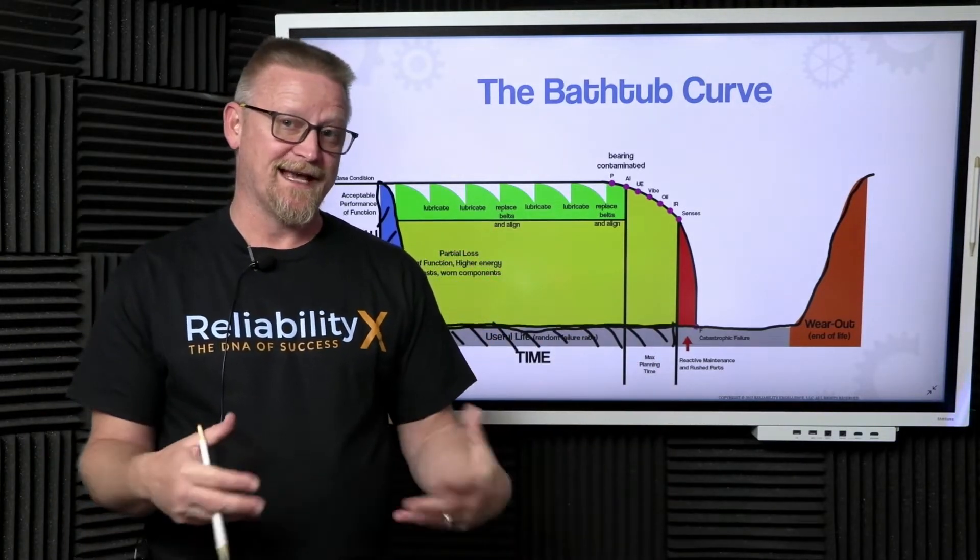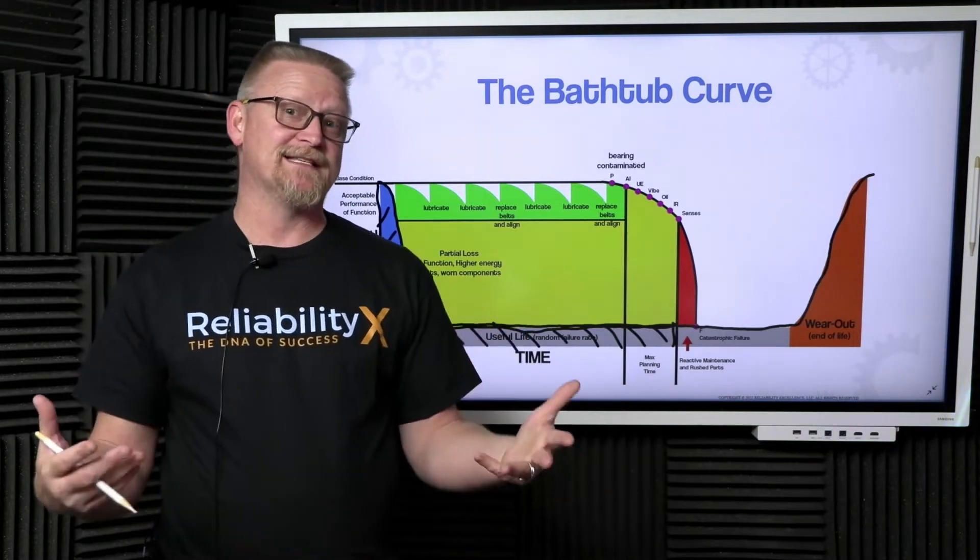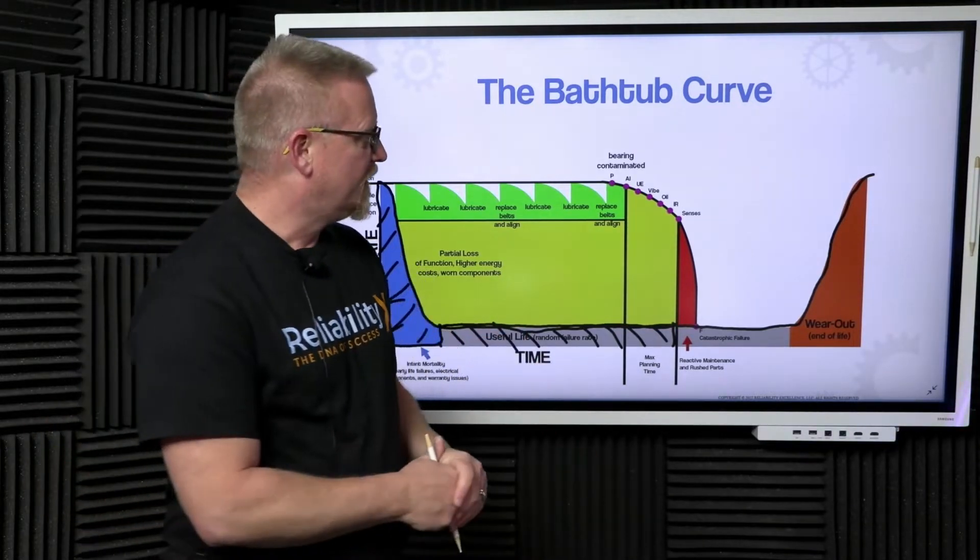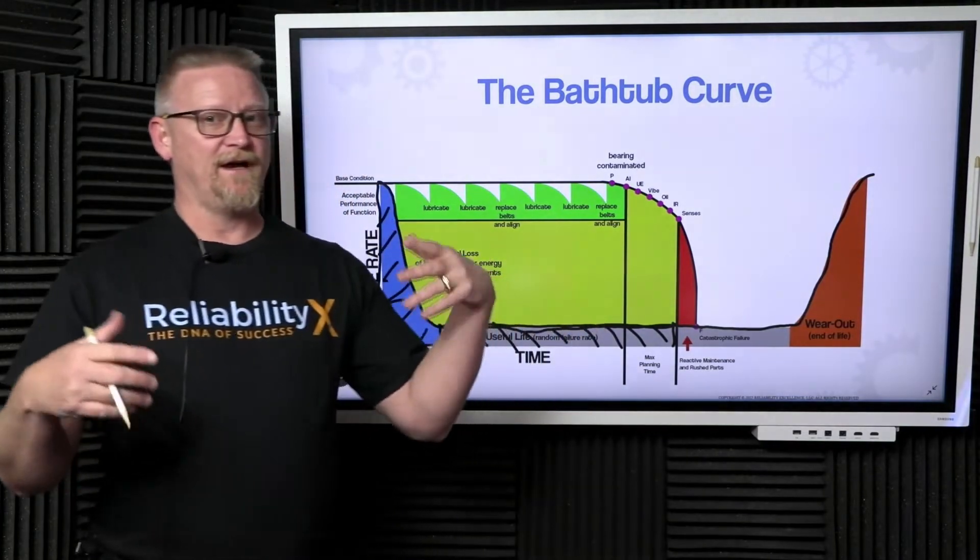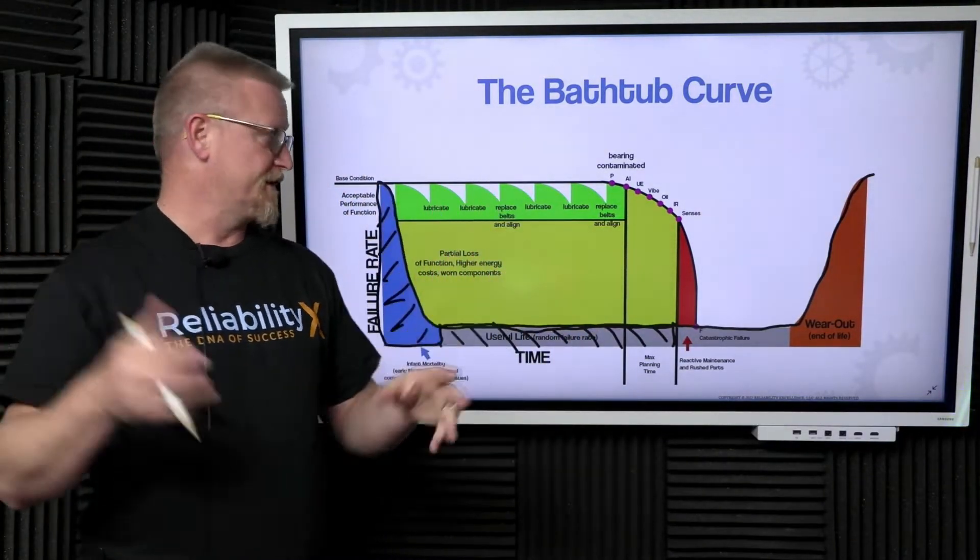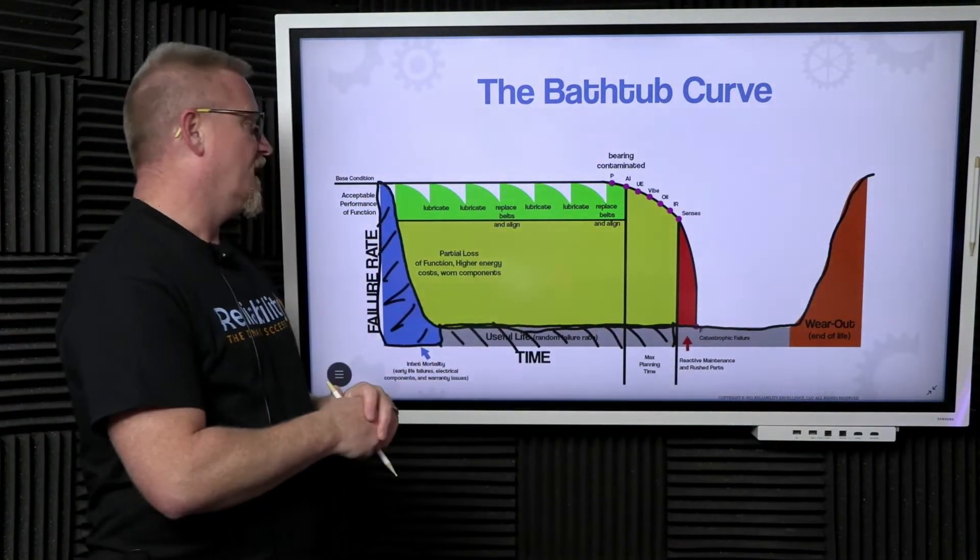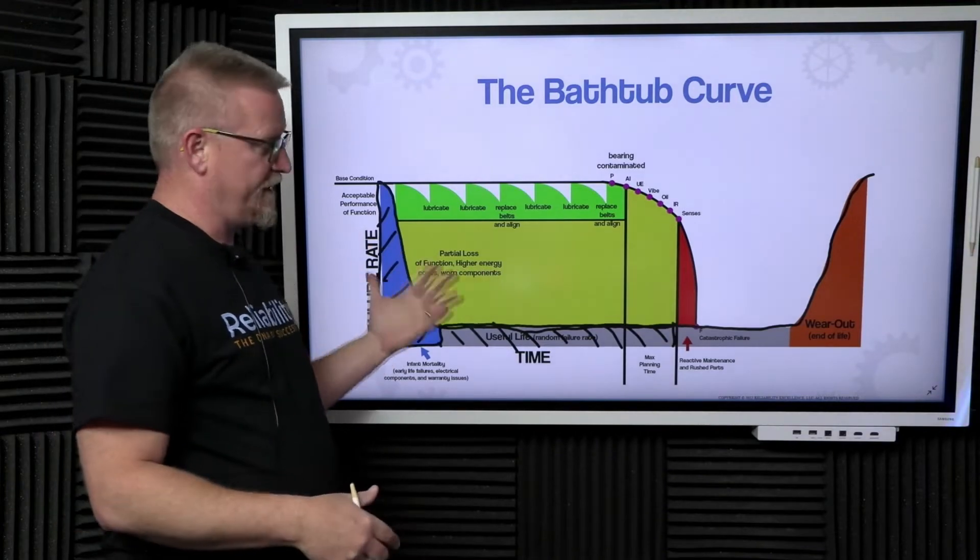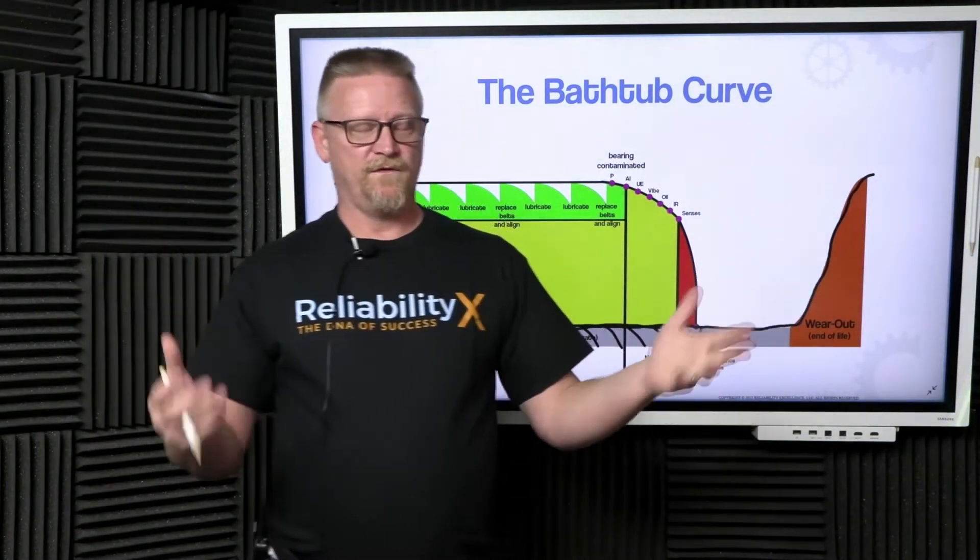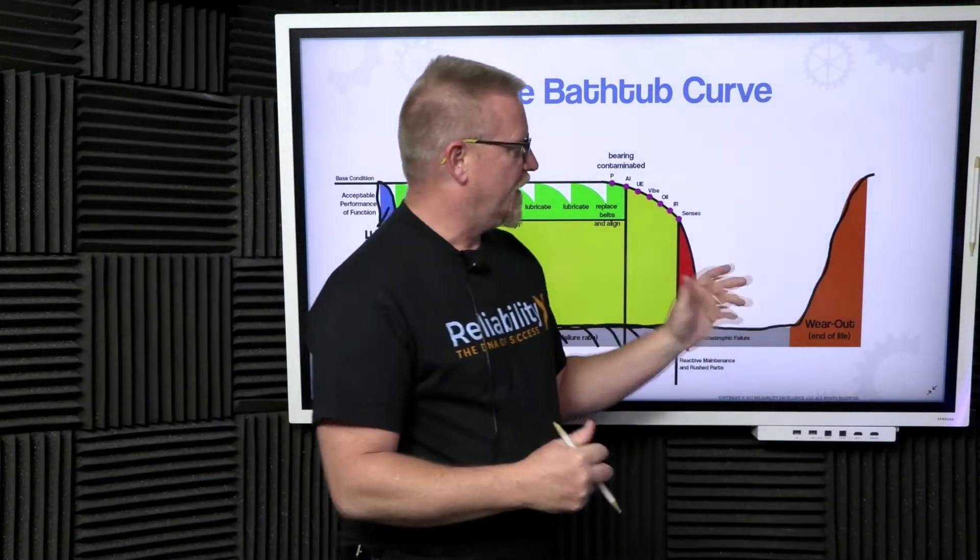Typically wear out is age-related, meaning the asset has survived its entire useful life and it's just no longer capable of performing its functions as designed, so it has phased out or worn out.